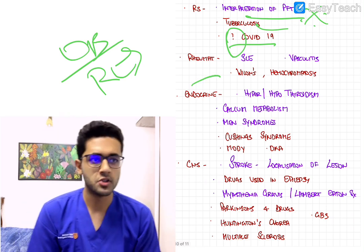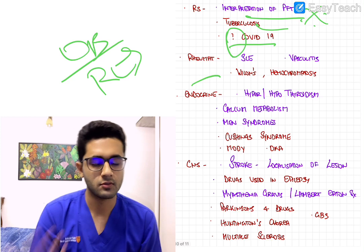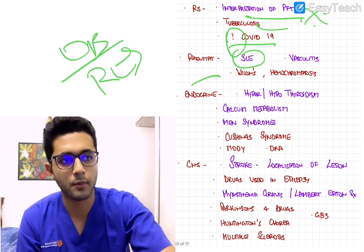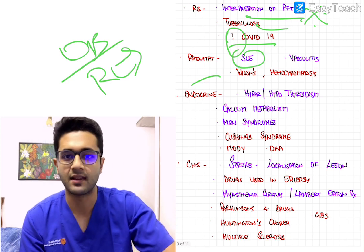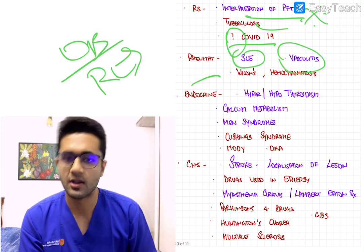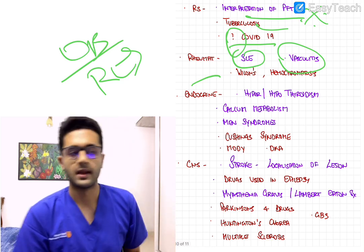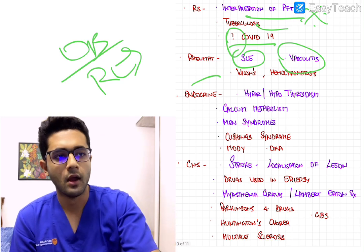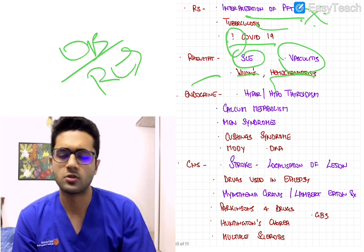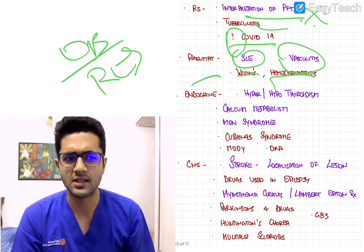Next, rheumatology — something very confusing that we tend to ignore. Remember it's important to read SLE criteria, and all those vasculitides which we skip during UG — fine-tuning that for exam preparation is important here. Wilson's disease and hemochromatosis are frequently asked and are usually easy to identify.